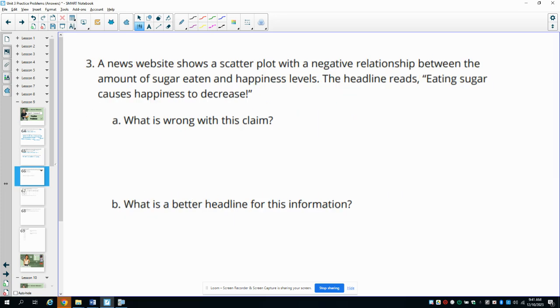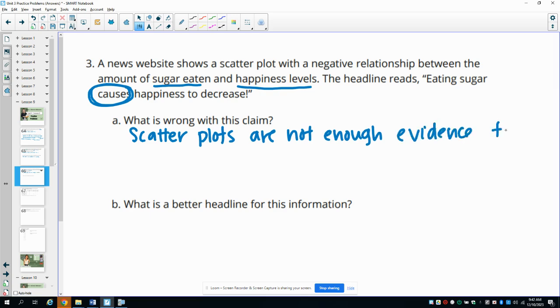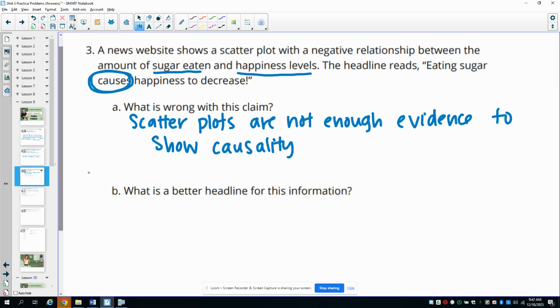Number three, a news website shows a scatterplot with a negative relationship between the amount of sugar eaten and happiness levels. A headline reads, eating sugars causes happiness to decrease. What's wrong with this claim? And it's this word causes. So scatterplots don't prove causality. They don't prove that one causes the other. So scatterplots are not enough evidence to show causality.